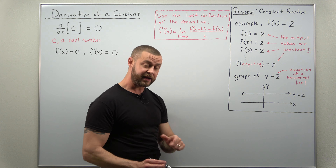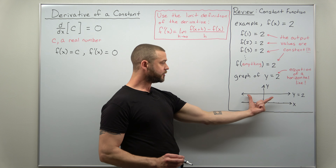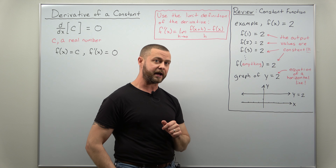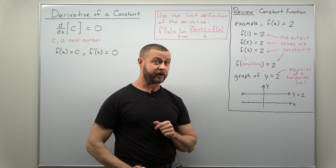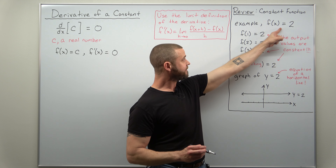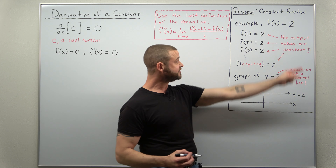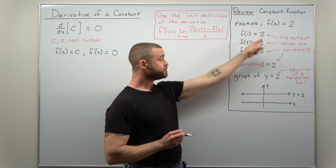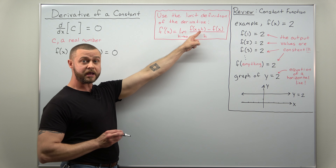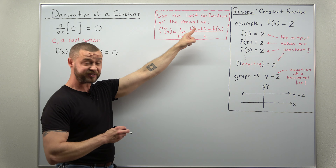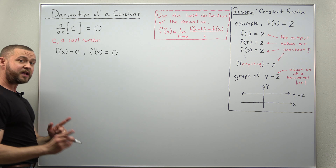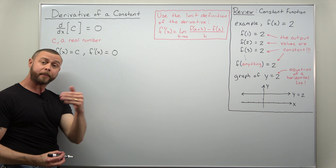Now with that out of the way, let's understand what the graph is. The graph of any constant — something of the form y equals a number — is the equation for a horizontal line. Now notice: whatever we plug in to f of x equals 2, the constant c here is 2, the output value is just that constant, 2. So let's go to the limit definition — you're plugging in two things: f of x plus h and f of x. Let's apply the limit definition using f of x as a general or arbitrary constant c.